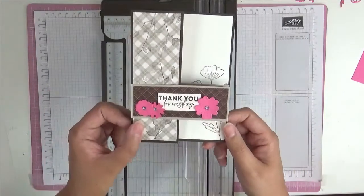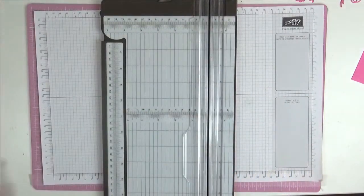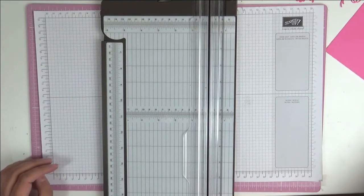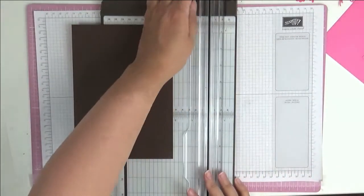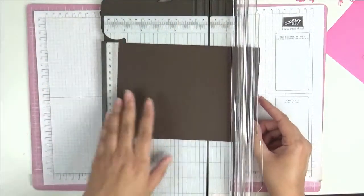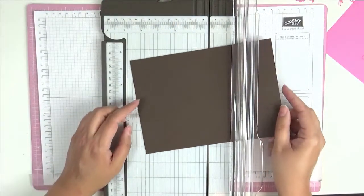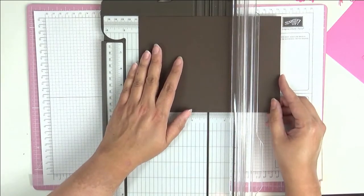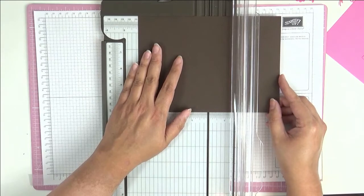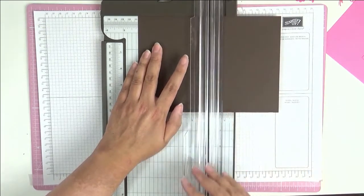If you can see, it's this form of a Z fold card. Isn't it cute? So let me show you what I did. We're going to start off with our base which is Early Espresso, and this is just half an A4 sheet of cardstock cut in half along the long side, and we're going to do some scoring.